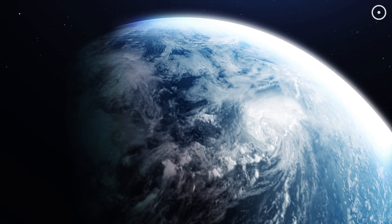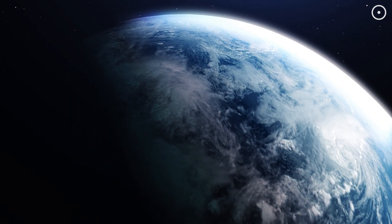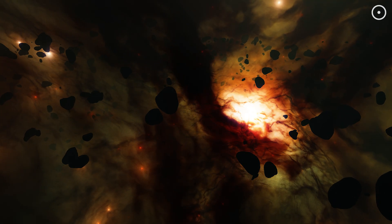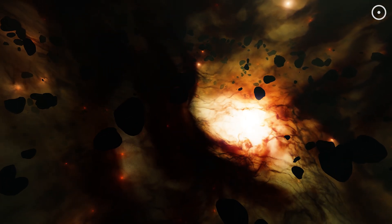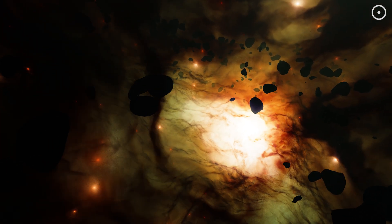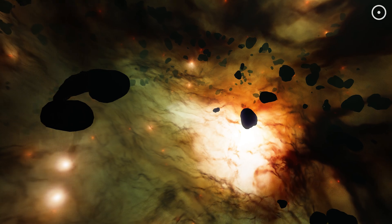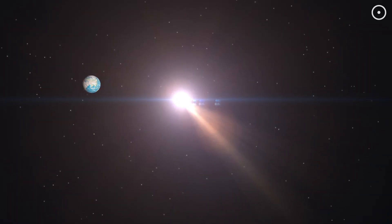Interestingly, some scientists believe that past supernovae could have influenced life on Earth. There's a hypothesis that a nearby supernova around 2.6 million years ago might have contributed to a minor extinction event. The cosmic rays from such an explosion could have affected the Earth's climate and biological evolution.